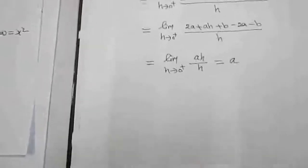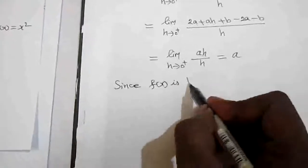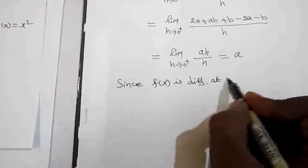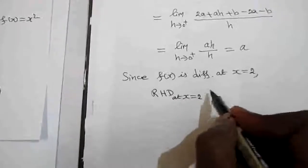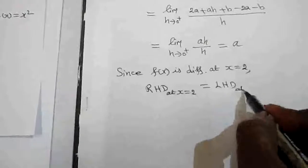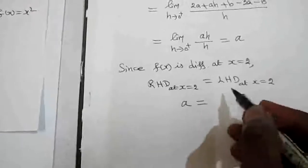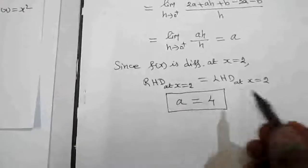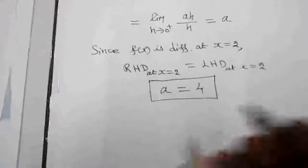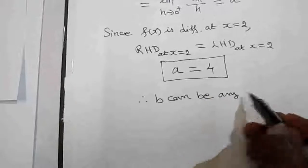Since f(x) is differentiable at x equal to 2, the right hand derivative at x equal to 2 must equal the left hand derivative at x equal to 2. We found the right hand derivative is a, and the left hand derivative is 4. Therefore, a equals 4. Since b cancelled out in the calculation, b can be any defined value.